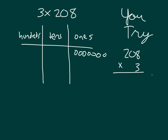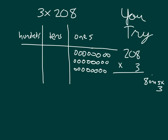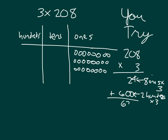Did you start with eight ones? With those eight ones we're multiplying by three. Just like we're doing here in our partial products, that would be eight ones times three, which is 24 ones. Next, there are no tens in 208, so we go all the way to the hundreds place, which would be two hundreds times three, which is six hundreds, written as six zero zero.